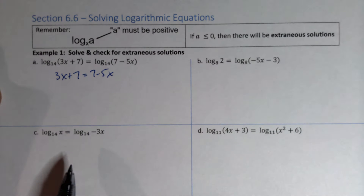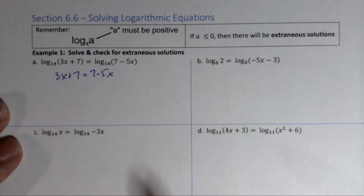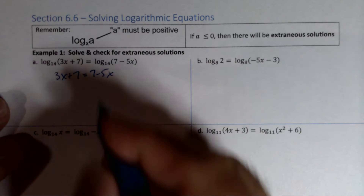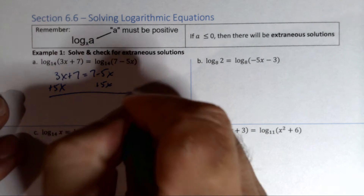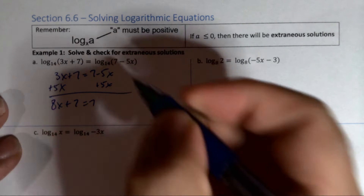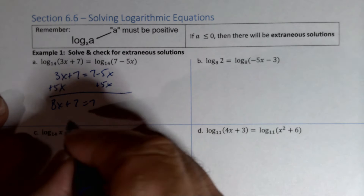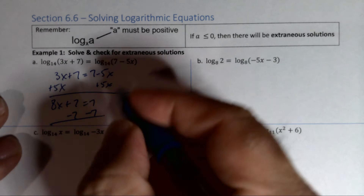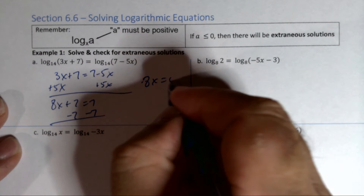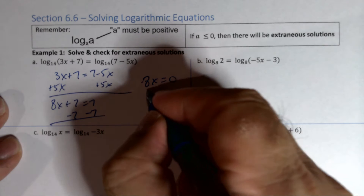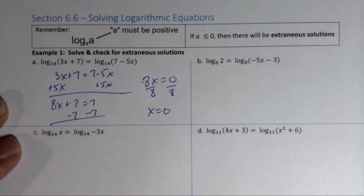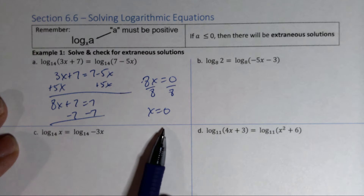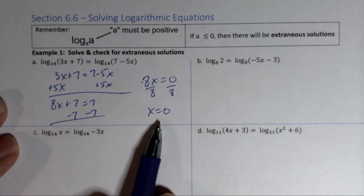So for example A, we drop the logs and get 3x + 7 = 7 − 5x. Adding 5x to both sides gives 8x + 7 = 7. Subtracting 7 from both sides gives 8x = 0, and dividing by 8 gives x = 0.